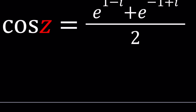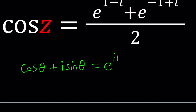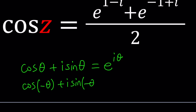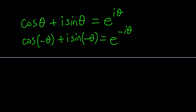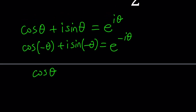Cosine of something — that's what we are trying to get at. So if you have cosine of theta plus i sine theta, thanks to Euler, this can be written in exponential form as e to the power i theta. Now what happens if I replace theta with negative theta? Cosine is an even function, so cosine of negative theta will be the same as cosine theta.